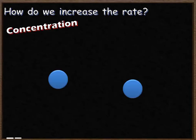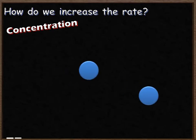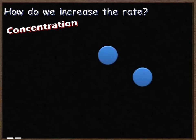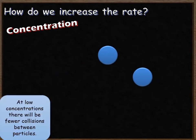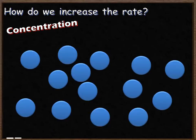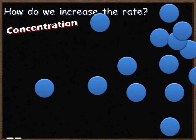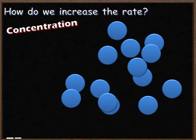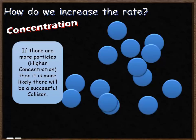The first factor we're going to look at is concentration. At a very low concentration, there are going to be very few collisions between particles — there aren't many particles, lots of spaces, so those reactant particles won't collide very often. If you increase the concentration, there are lots and lots of reactant particles, meaning there are going to be more collisions, and therefore it's likely more of them will be successful, giving us a higher rate of reaction.